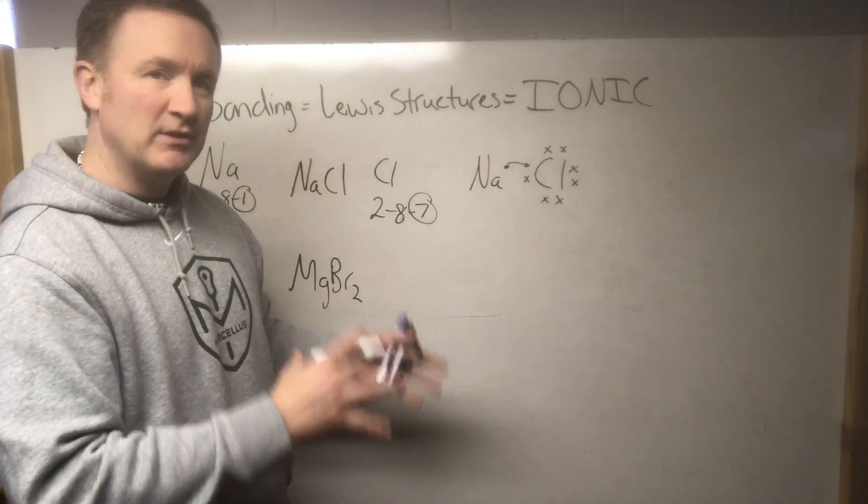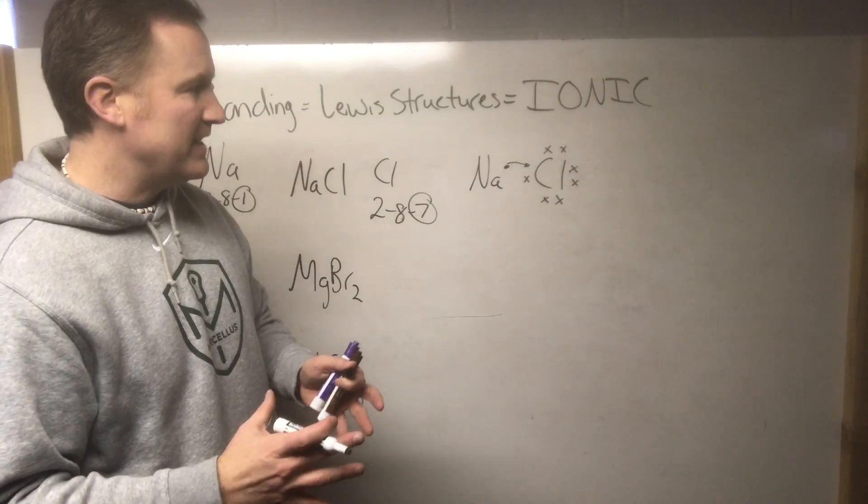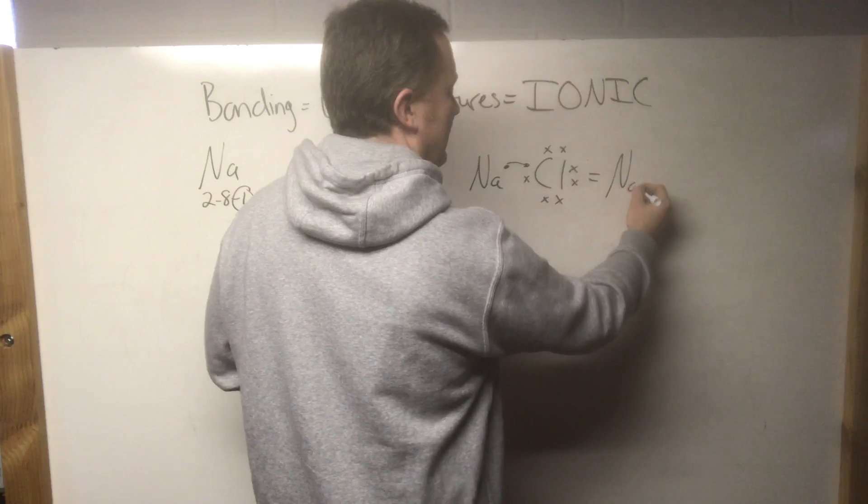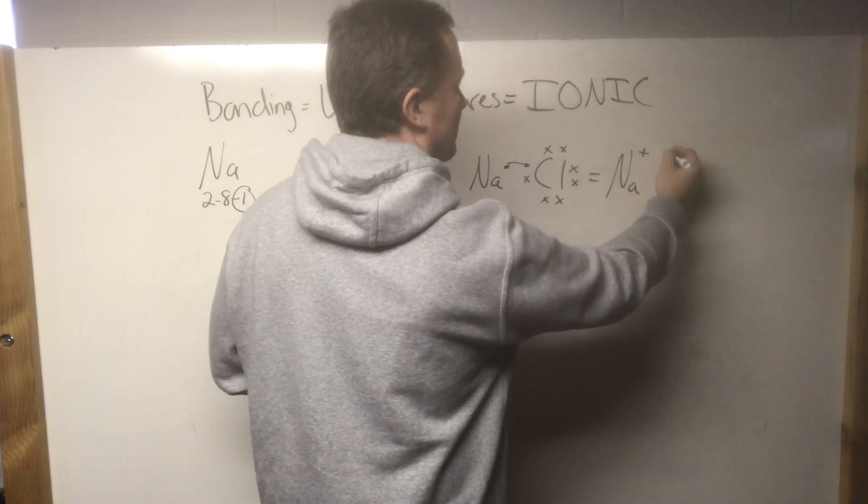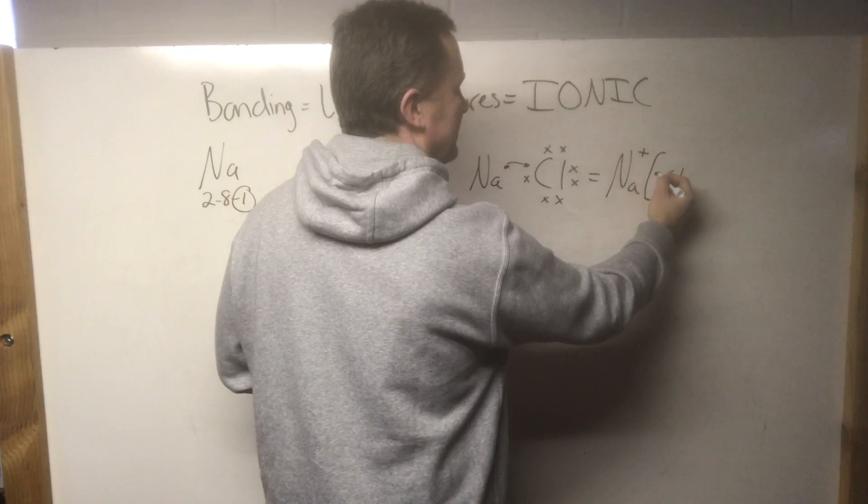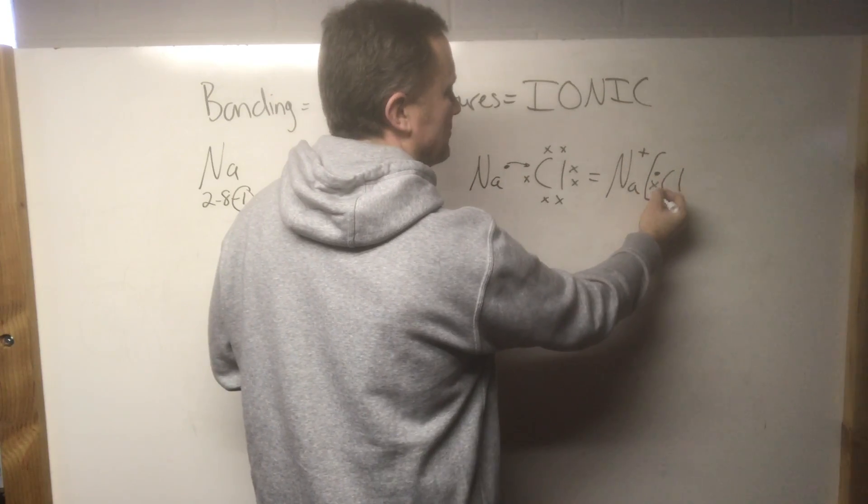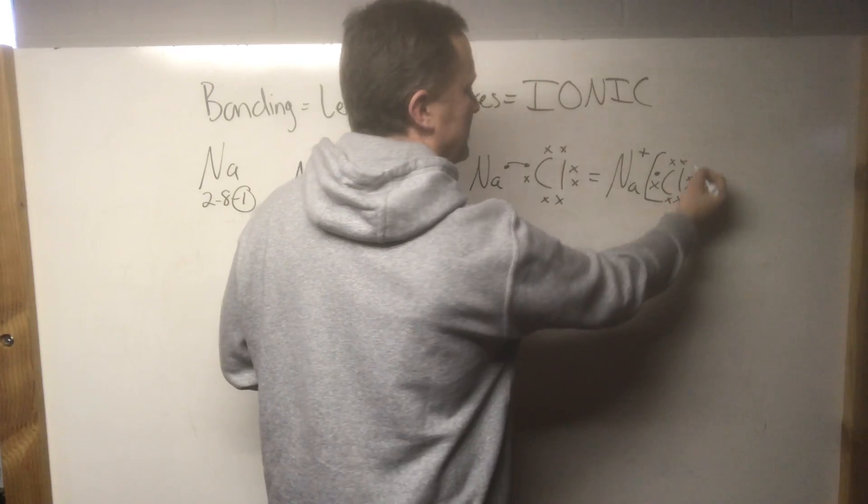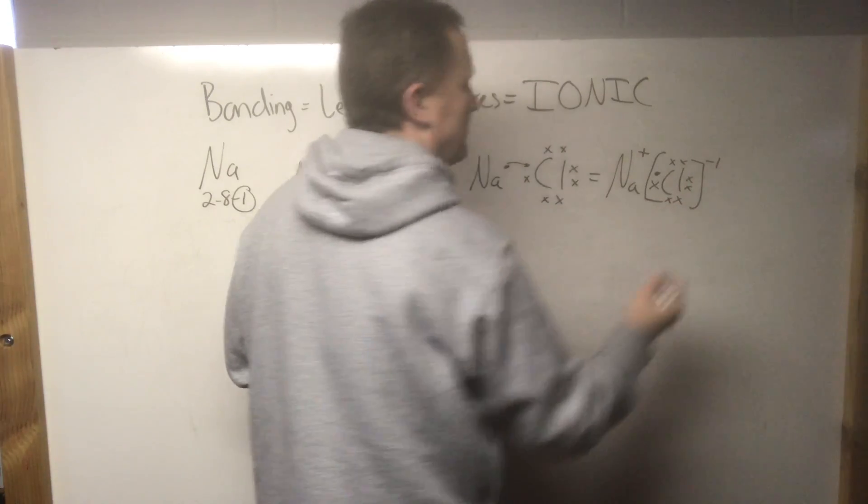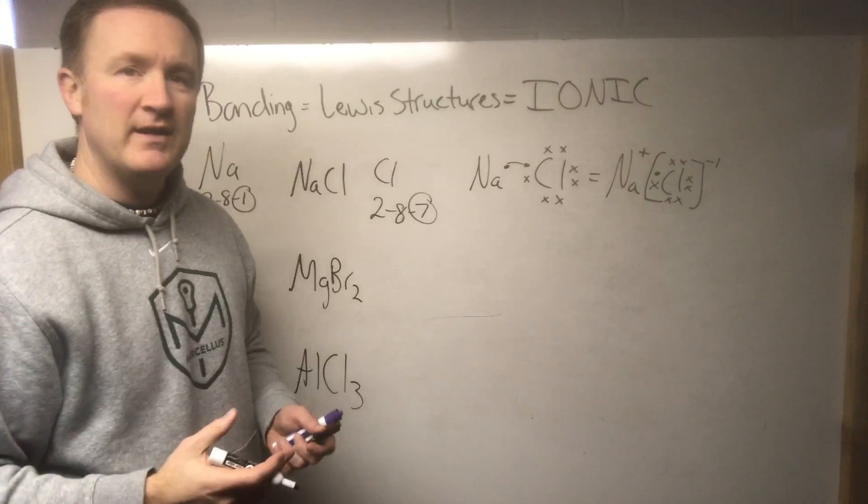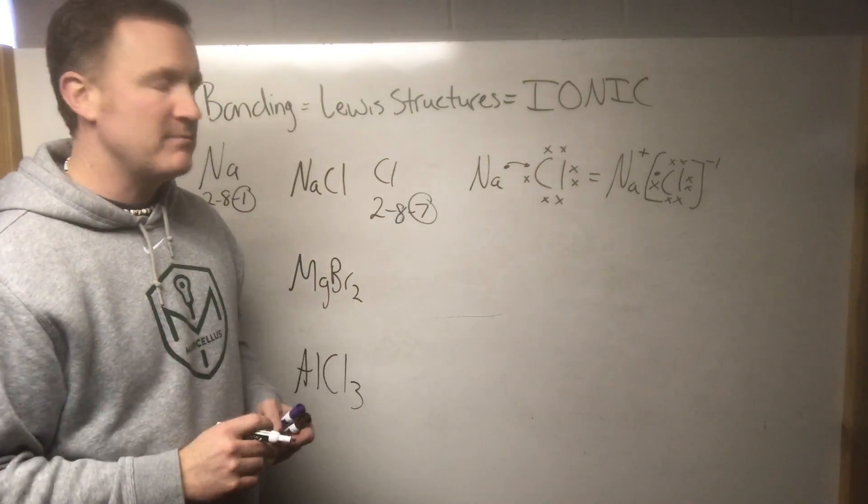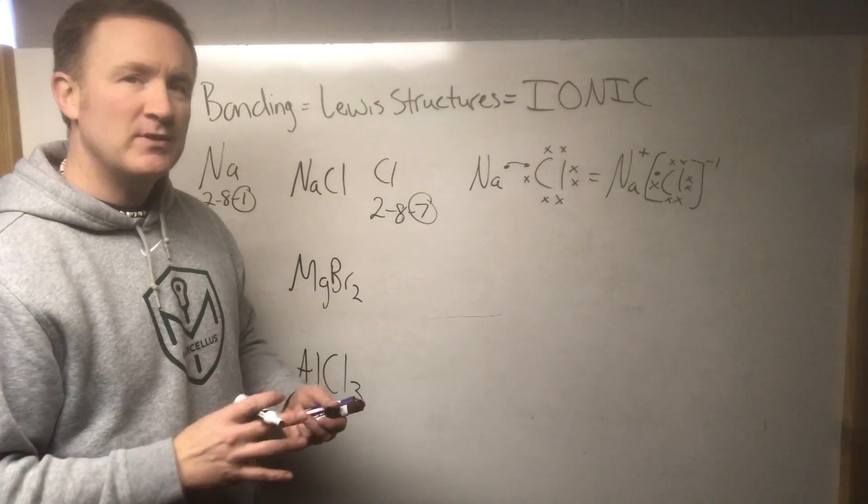Sodium loses the electron and becomes positive, chlorine gains and becomes negative. So our final product then: sodium becomes positive, chlorine we're going to put in brackets, and I'm going to designate that extra electron by a different symbol just showing that it came from the sodium. Then chlorine becomes minus one because it has gained one electron. Plus one minus one, they balance out and become neutral, and that's one of the other key things—we need to make sure that the end result is a neutral material.